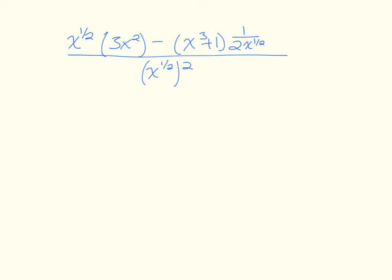From the previous slide, we have that our derivative is now x to the 1/2 power times 3x squared, minus x cubed plus 1 times 1 over 2x to the 1/2 power, all divided by x to the 1/2 power squared.